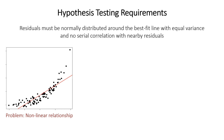Here's an example of a problem: a non-linear relationship. Fitting a straight line to a non-linear relationship is bad partly because the residuals aren't normally distributed. At very small x values, the points are almost all above the line; in the middle, almost all below; and at high x values, above again. This skewed distribution of residuals violates the assumption of normally distributed residuals at all fitted values. To fix this, you could transform the data to make it more linear, or use non-linear regression methods.